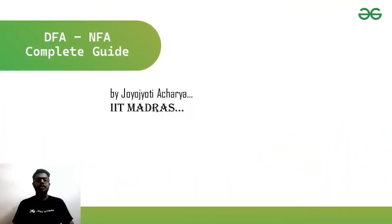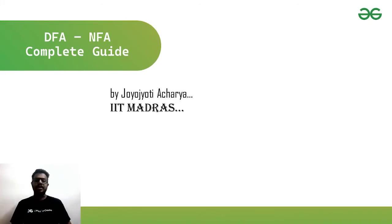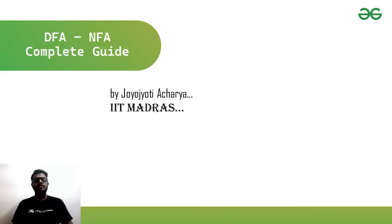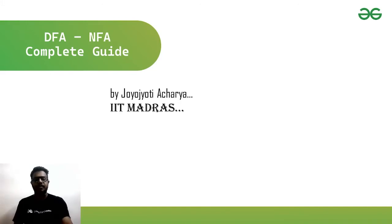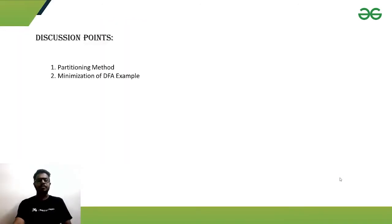Welcome to GeeksforGeeks. Today in the playlist of DFA/NFA complete guide, we will be discussing how to minimize the DFA. Given a language, multiple DFAs can accept the same language, but for efficient usage we need to find the minimal DFA — the one with the minimal number of states. This minimal DFA is unique: given a language, there will be only one minimal DFA possible. So given any DFA, today we will learn how to minimize it.